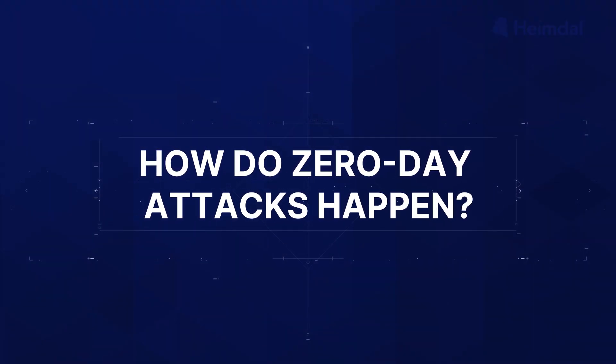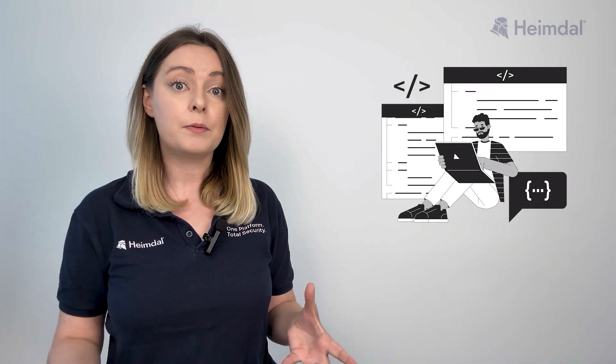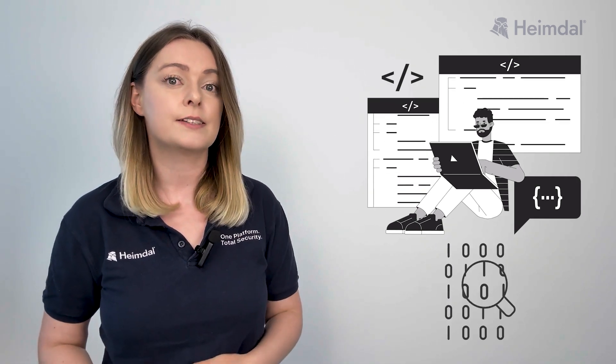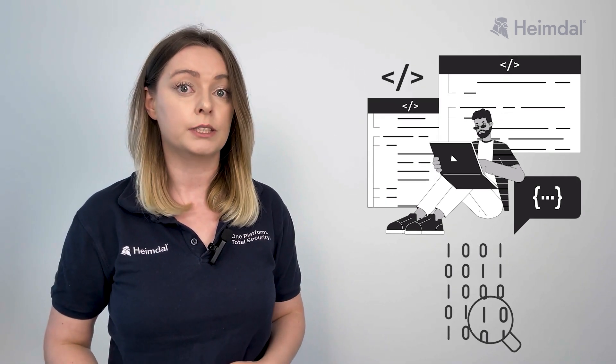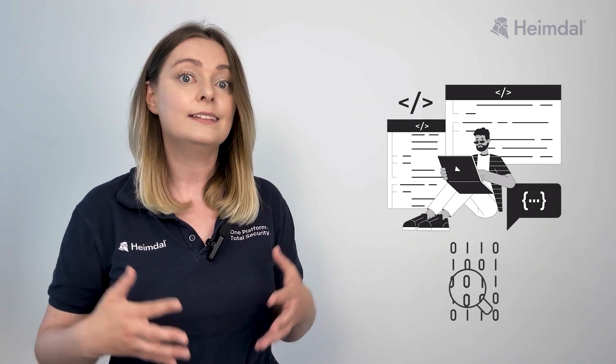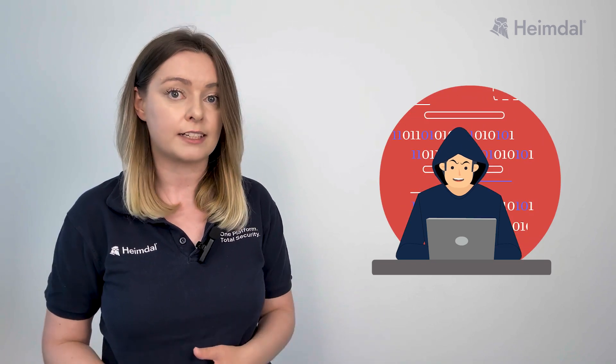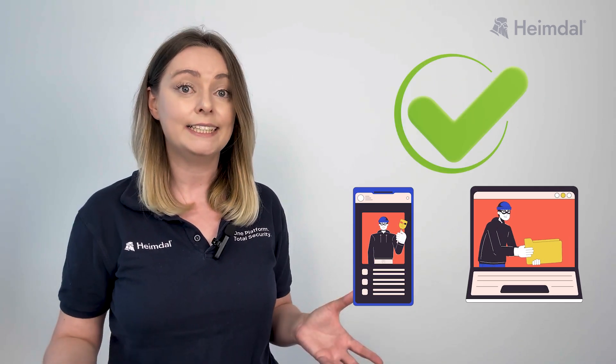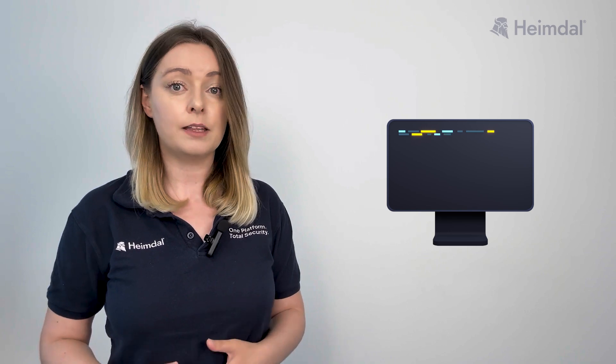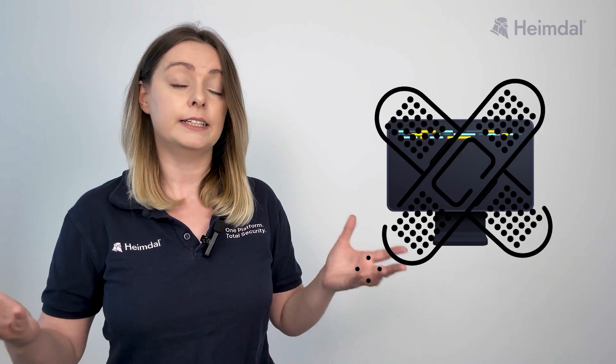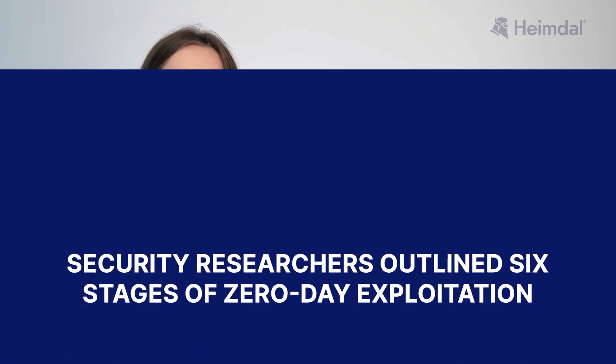A zero-day attack starts when a developer unknowingly releases vulnerable code, which is then discovered and exploited by a malicious actor. If the attack succeeds, it often leads to identity or data theft. The attack only stops being a zero-day exploit once the developer has created a patch and applied it.